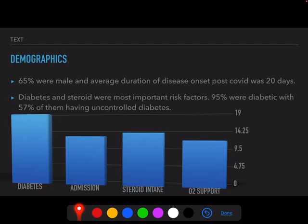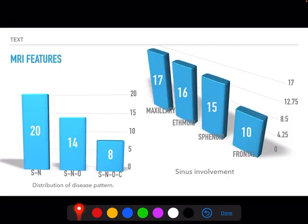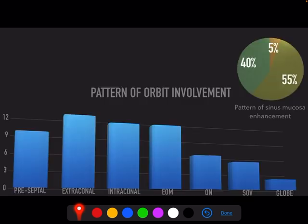Discussing the results: 65% of patients were male and the average duration of disease onset post-COVID was 20 days. Diabetes and steroid use were the most important risk factors; 95% of patients were diabetic, with 57% having uncontrolled diabetes mellitus. All 20 patients had sinonasal disease (stage 1 and 2). 14 patients had stage 3 disease (sinonasal-orbital) and 8 patients had stage 4 orbitocerebral disease. The maxillary sinus was most commonly involved, with the frontal sinus being the least common.